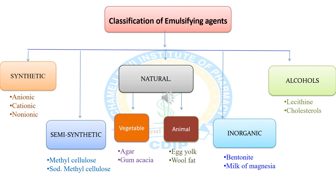Non-ionic surfactants such as glyceryl esters — glyceryl monostearate, sorbitan fatty acid stearate — are used as non-ionic emulsifiers. Non-ionic emulsifiers are widely used in pharmaceutical formulation. The second class is semi-synthetic emulsifying agents, which are mainly polysaccharides.